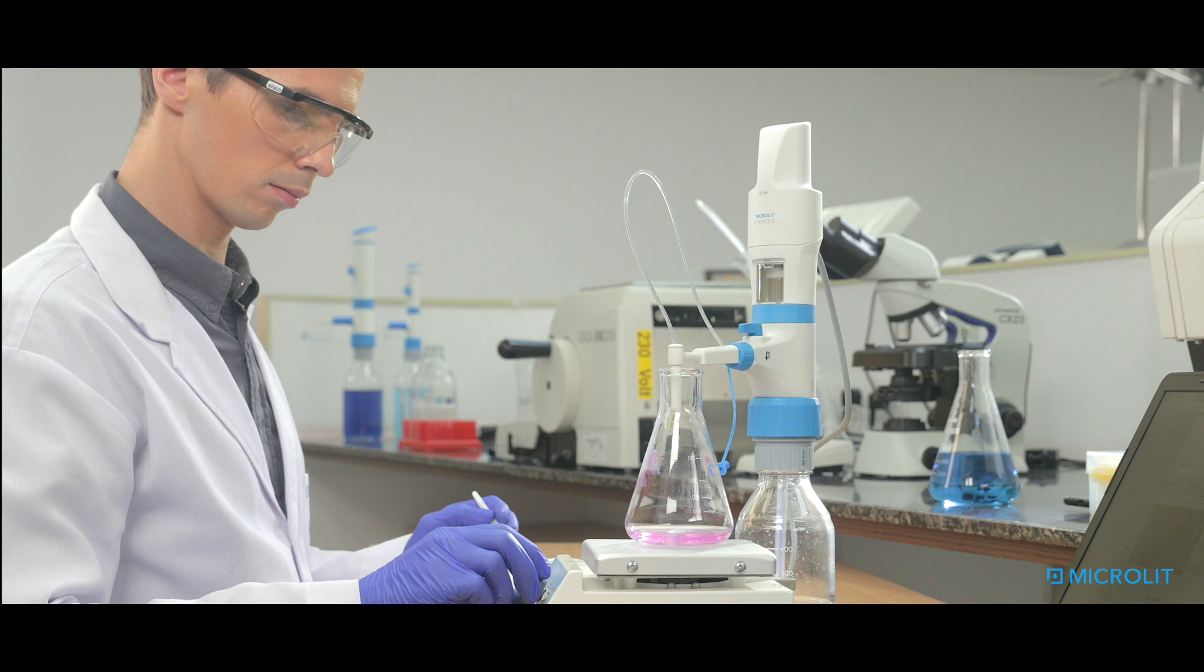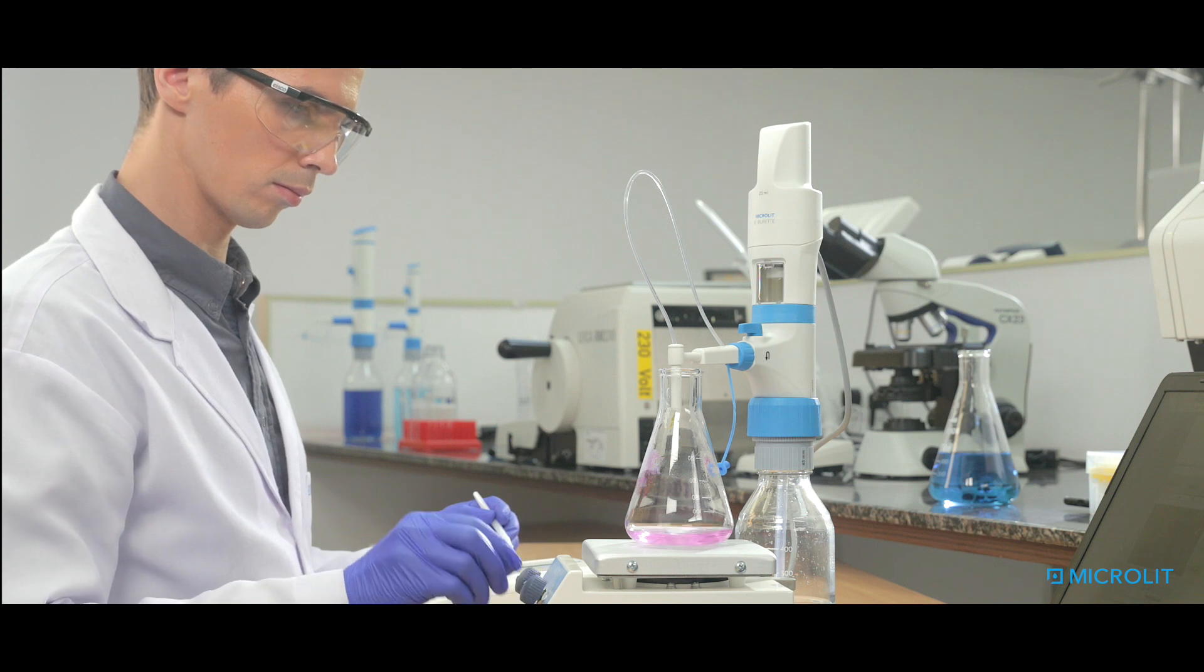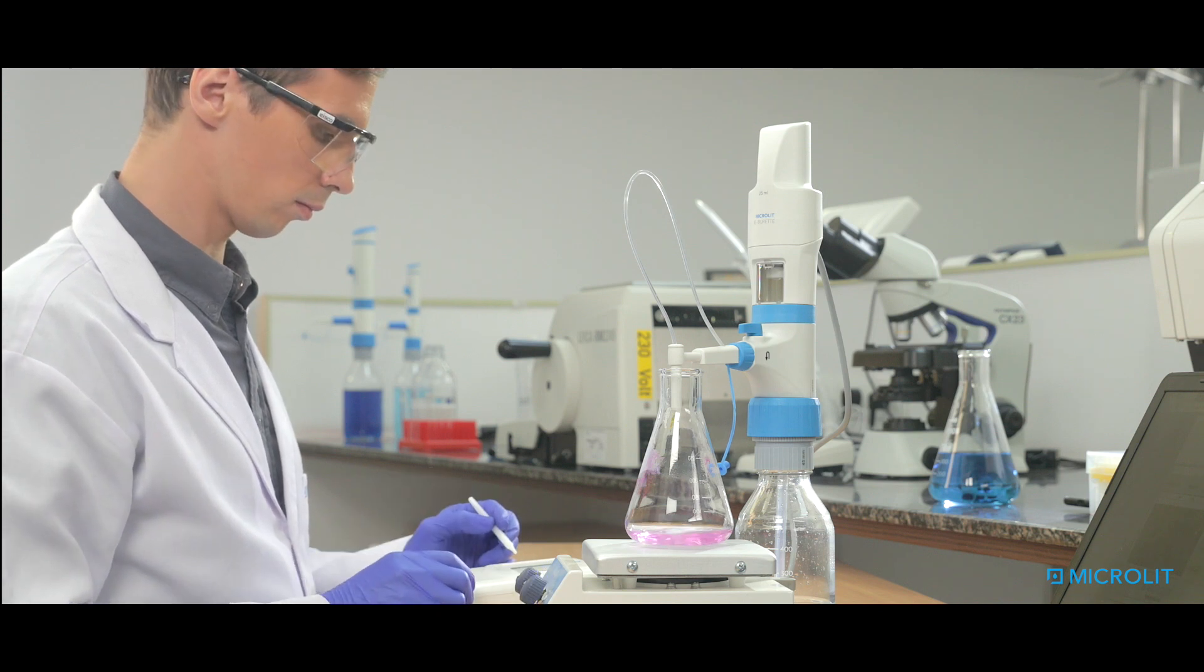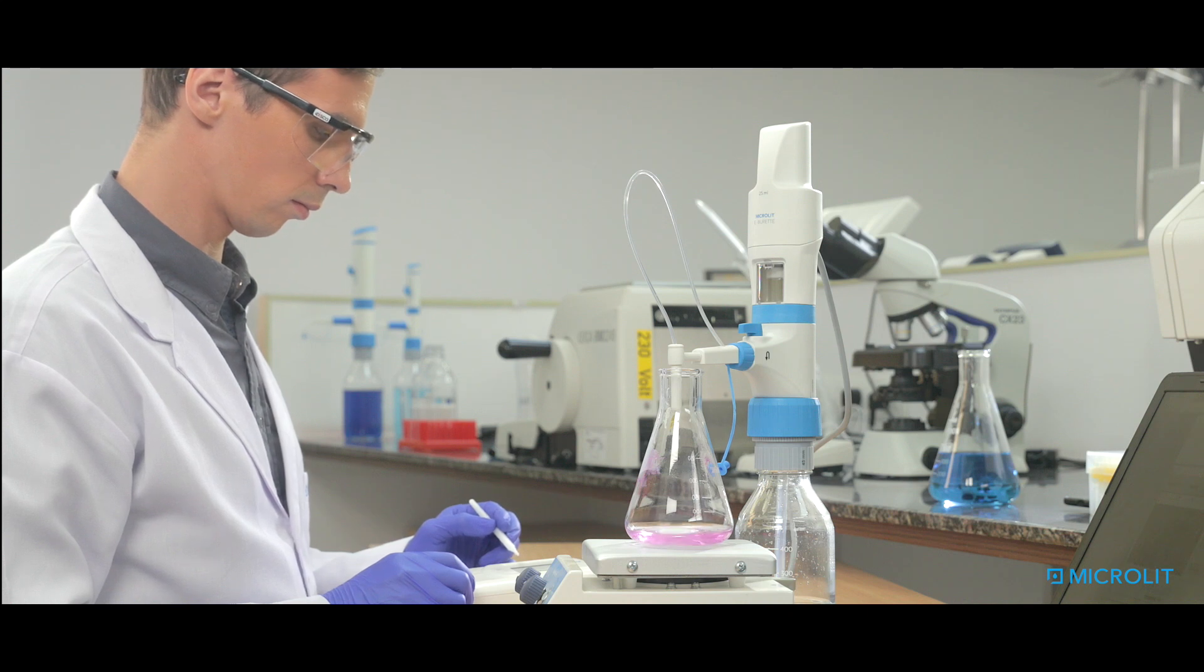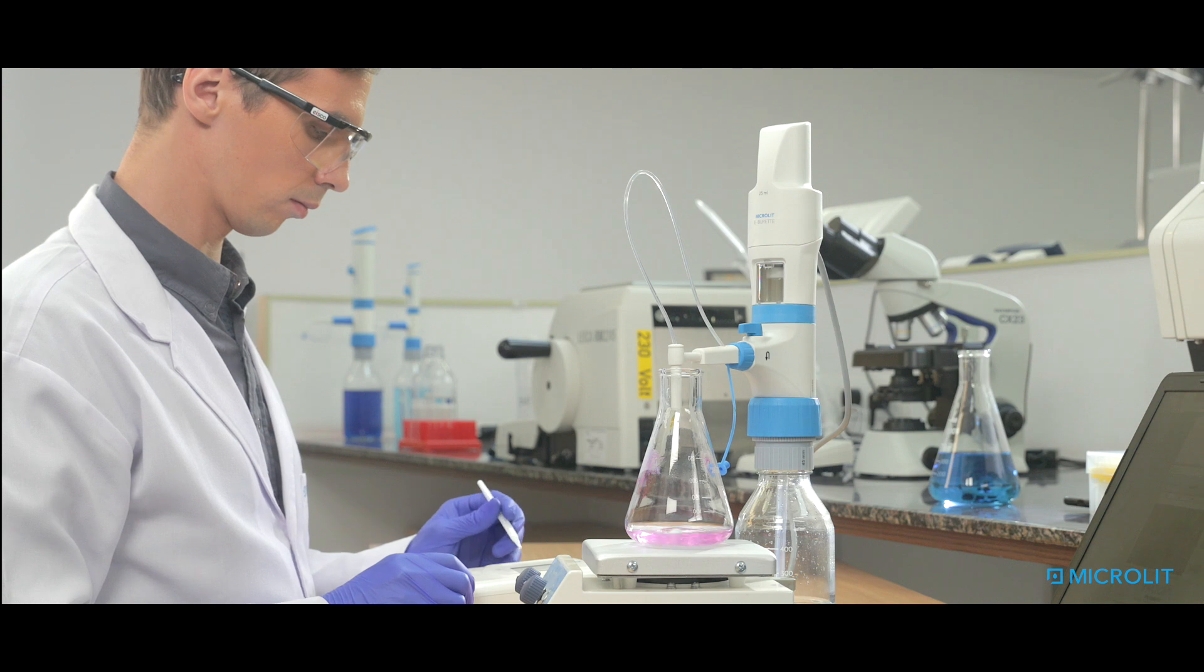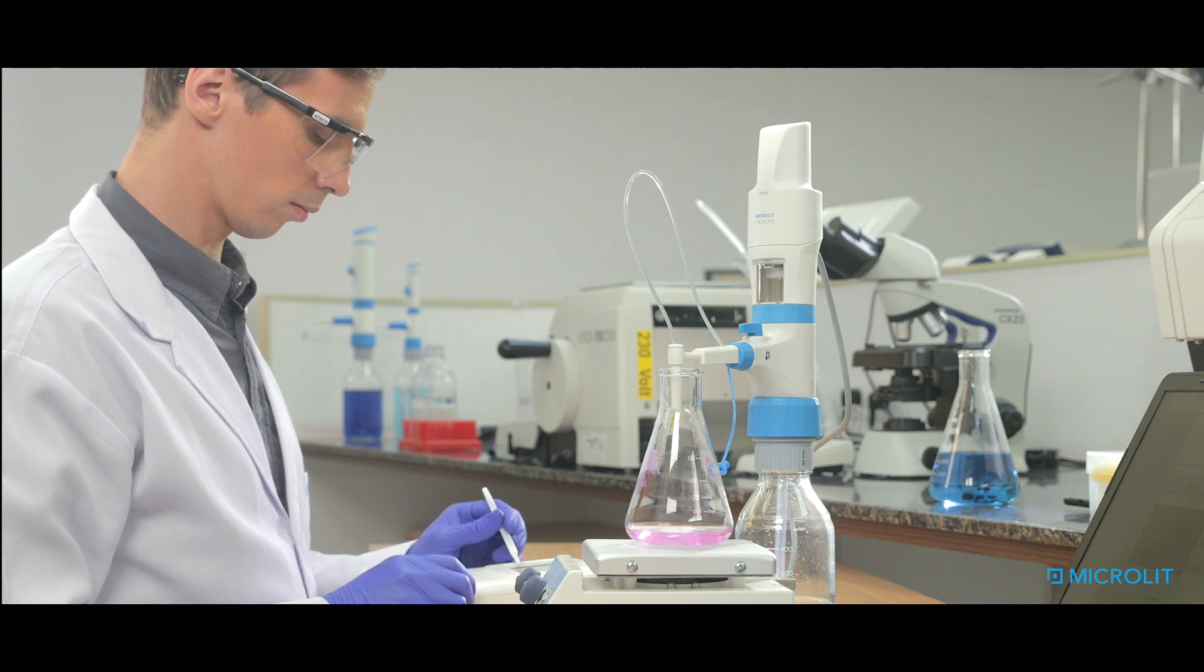Here we have hydrochloric acid as the titrant and sodium hydroxide solution as the analyte. We mix a few drops of an indicator, phenolphthalein, in the sodium hydroxide solution, which turns it dark pink. The titration is set to give a reading of 18.1 milliliters.